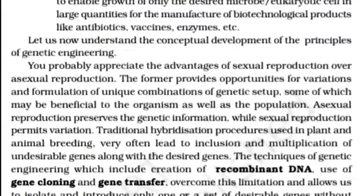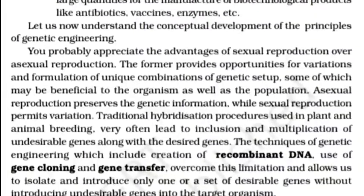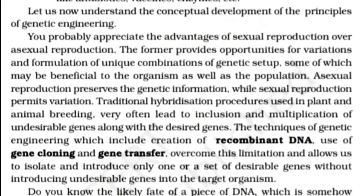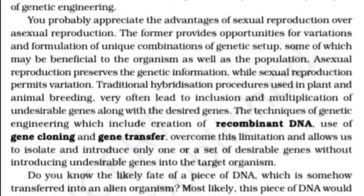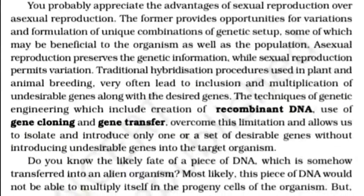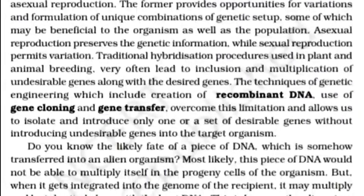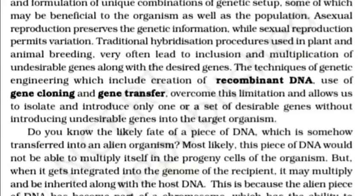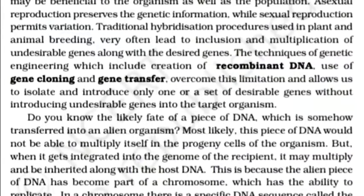Sexual reproduction provides the opportunity for variation and formation of unique combinations of genetic setups, some of which may be beneficial to the organism as well as the population. Asexual reproduction preserves genetic information while sexual reproduction permits variation. Traditional hybridization processes used in plant and animal breeding very often lead to inclusion of undesirable genes along with the desired genes. Techniques of genetic engineering, which include creation of recombinant DNA, use of gene cloning and gene transfer, overcome this limitation and allow us to isolate and introduce only desirable genes without introducing undesirable genes into the target organism.